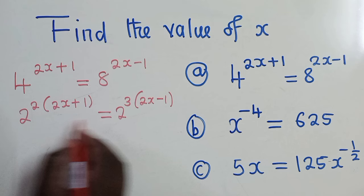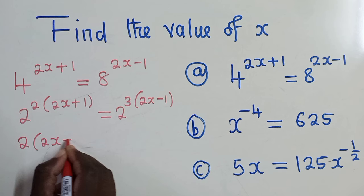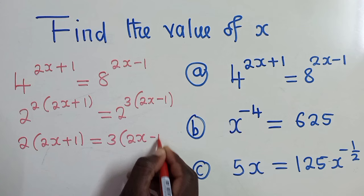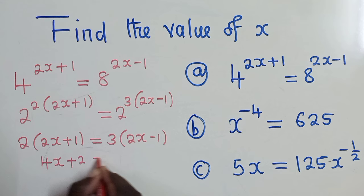2, open bracket, 2x plus 1 there, equal to 3, open bracket, 2x minus 1. So here we have 4x plus 2, which is equal to 6x minus 3.